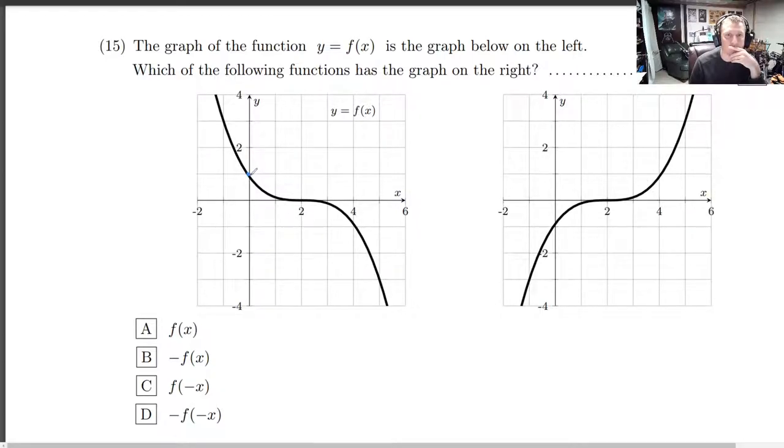Okay, y-intercept of 1, zero at 2. Sort of a symmetric pattern here happening. Go over 2, down 1, over 2, up 1. Okay, which of the following functions has the graph on the right?